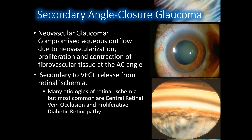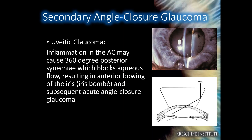Angle closure glaucoma may also be due to secondary causes such as neovascular glaucoma, where there is compromised aqueous outflow at the trabecular meshwork due to neovascularization, proliferation, and contraction of fibrovascular tissue at the angle. Another secondary cause is uveitic glaucoma, where inflammation from uveitis in the anterior chamber may cause a 360-degree posterior synechiae, blocking aqueous outflow and resulting in anterior bowing of the iris, as seen in the images to the right.